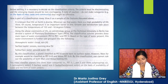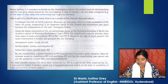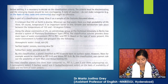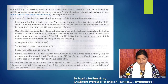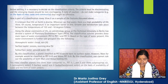Growth and metabolism take place between the temperatures of 122 and 18 degrees Celsius. Using the above constraints of life, an astrobiology group at the Technical University in Berlin has devised a system of planetary environment types, PETs. The classification scheme provides three main types of water environment: PET-0, PET-1, and PET-2.